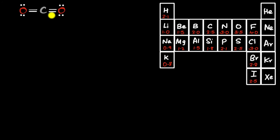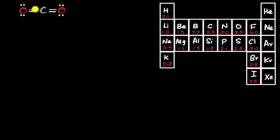The Lewis dot structure doesn't represent the 3D structure. To find that, we use VSEPR. Looking at the central carbon atom, there are two electron groups — remember that an entire double bond counts as one group. With two electron groups, they'll be as far apart as possible, giving an angle of 180°, so the 3D structure of CO₂ is linear.